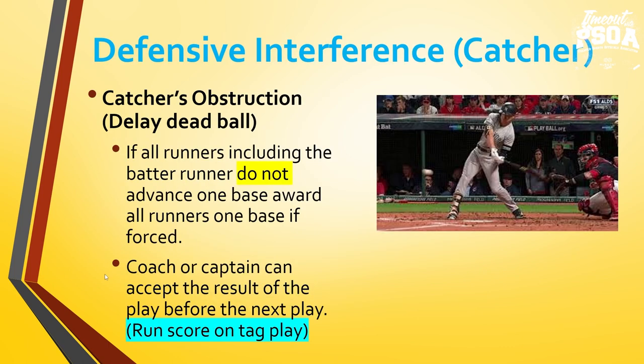Let's start with defensive interference — catcher interference. In NFHS rules, this is called catcher's obstruction. This is a delay dead ball. Because if all runners, including the batter runner, do not advance one base award, the batter will be given first base. All other runners get one base if forced by that batter runner becoming a runner.